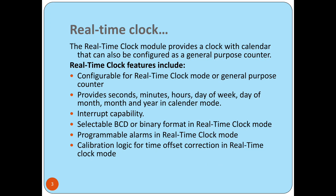The user has the facility to select the display time in BCD form or in binary form. In general purpose counter mode, the real-time clock has four 8-bit registers that are cascaded to form a 32-bit register, and this 32-bit register is used to count time.